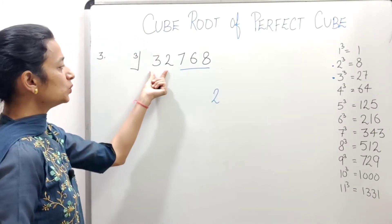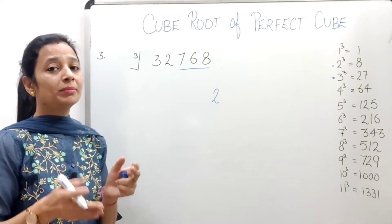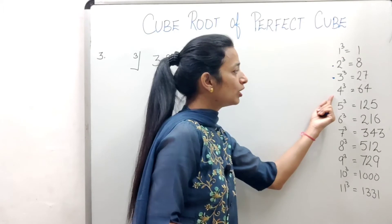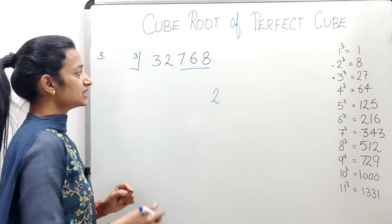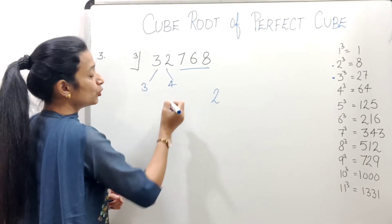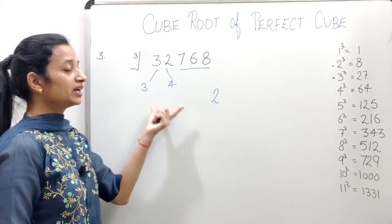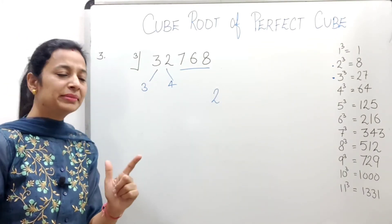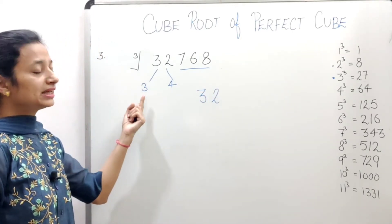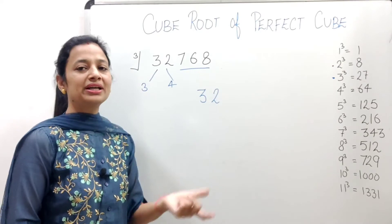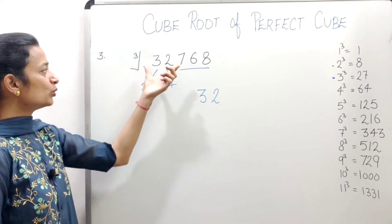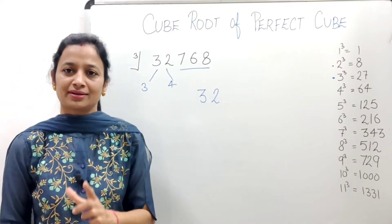And now, we will talk about 32. So 32 comes between which two cubes? Let's check. Look, 32 comes between 3 and 4's cubes. And from these two, what do we have to take? We have to take the smaller number. What is the smaller number? 3. That means 32 is the answer. Or we can say, 32 is the cube root of the given number.